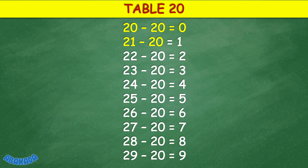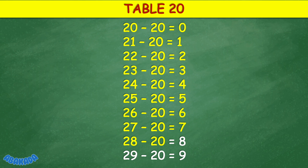Table 20: 20 minus 20 equals 0, 21 minus 20 equals 1, 22 minus 20 equals 2, 23 minus 20 equals 3, 24 minus 20 equals 4, 25 minus 20 equals 5, 26 minus 20 equals 6, 27 minus 20 equals 7, 28 minus 20 equals 8, 29 minus 20 equals 9.